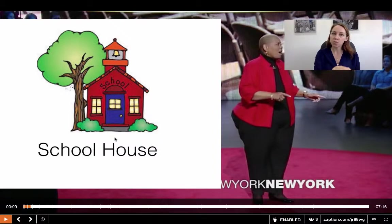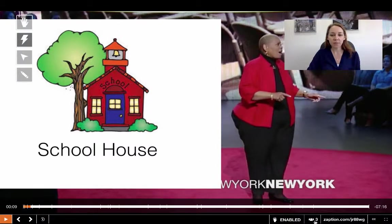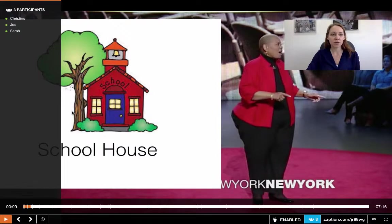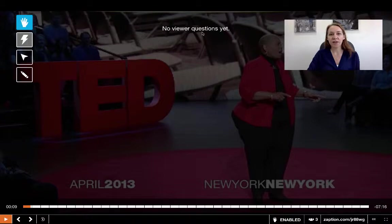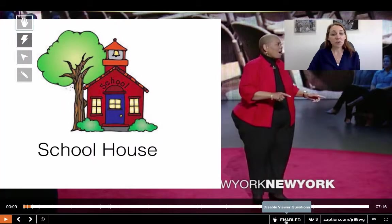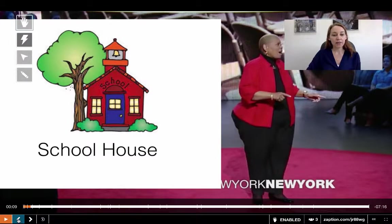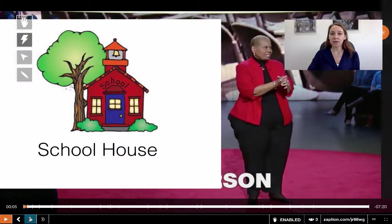If you do want to add an image with text, you're going to have to add the text to the image before bringing it into Zaption. You can see at the bottom right-hand side that I have three students in the course. You can see I have enabled the viewer questions. Down here at my timeline there are these little white lines — each one represents an interactive element I've added to the video. I can go back or forward to the next element, or go back five seconds in the video to review something with my students.